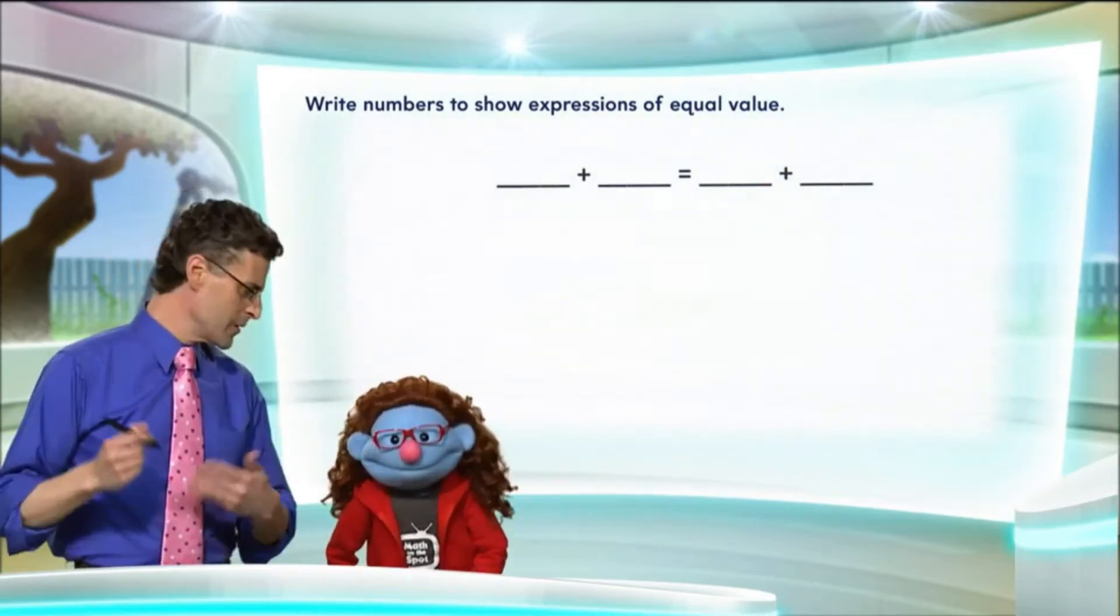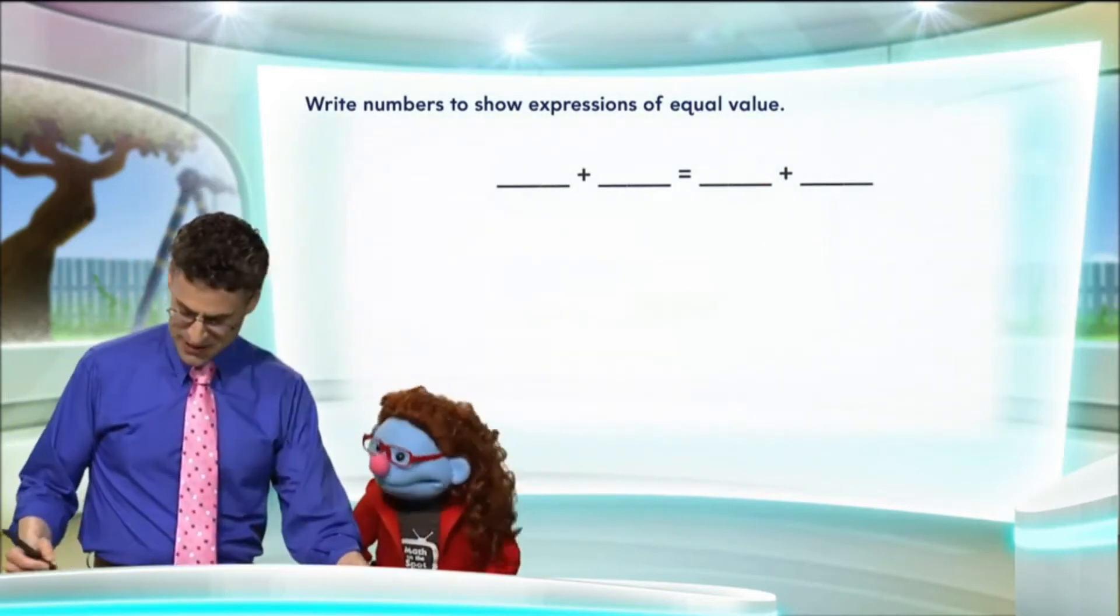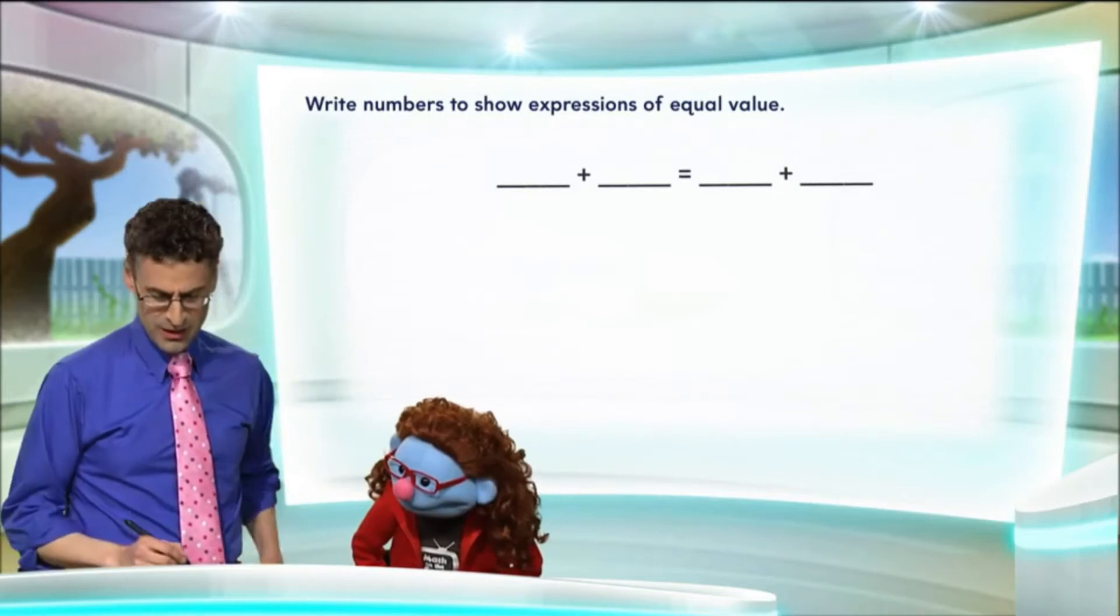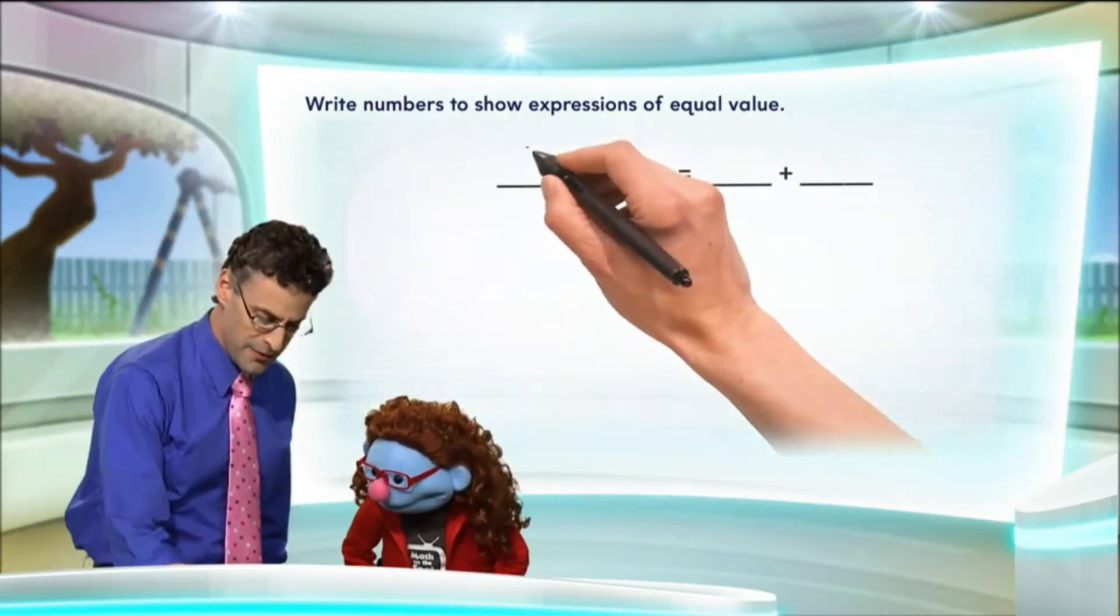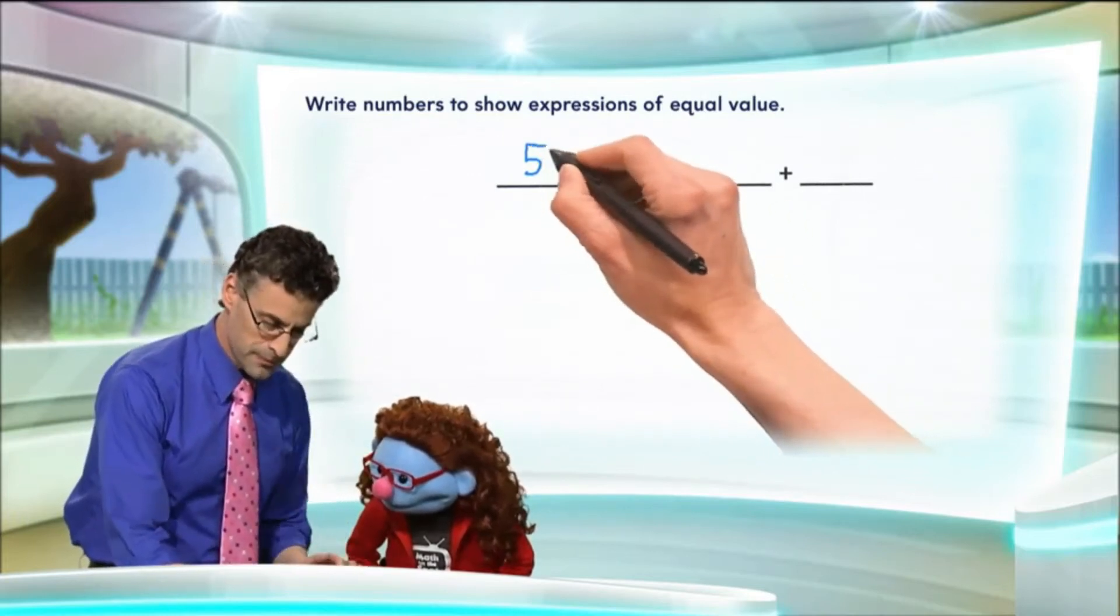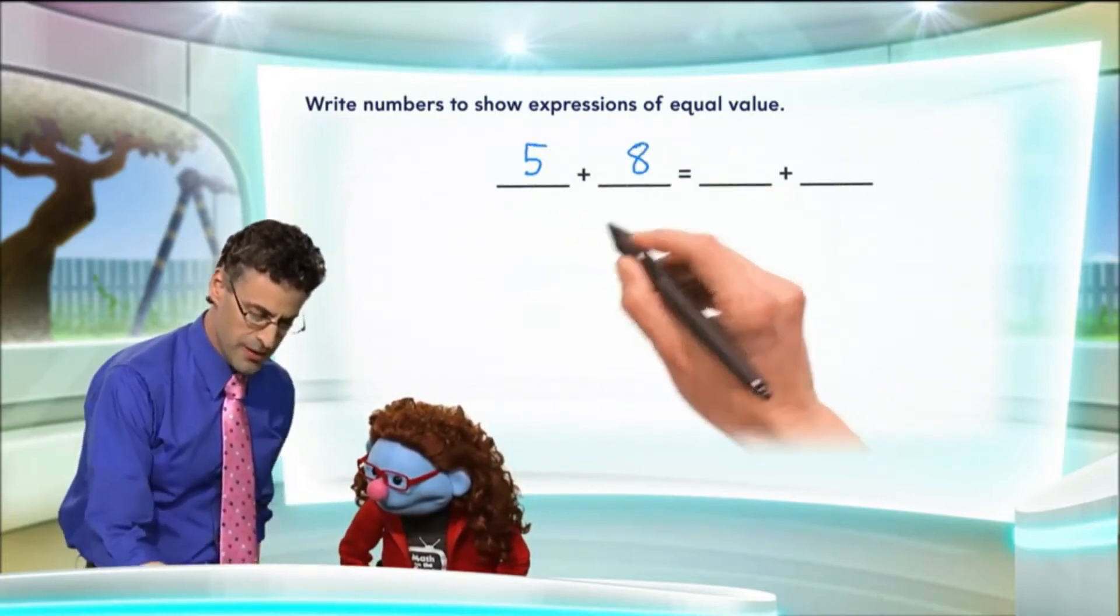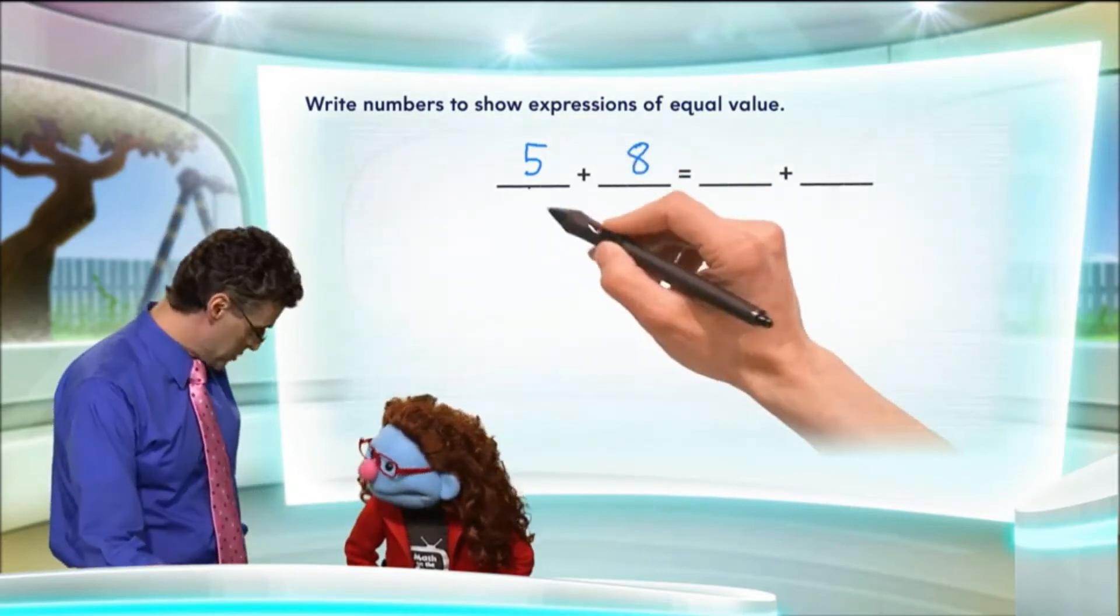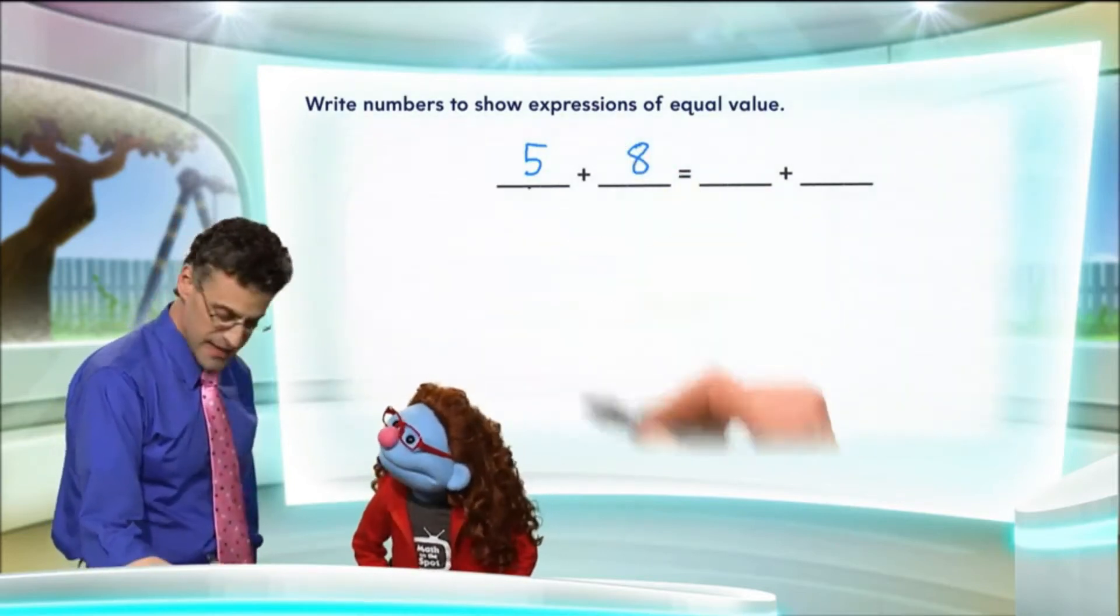So let's think about it. Now, we can pick any numbers we want to start with, so I'll just pick some, but there's no right or wrong here. Let's just pick 5 and 8. Now, 5 plus 8, that's an expression.